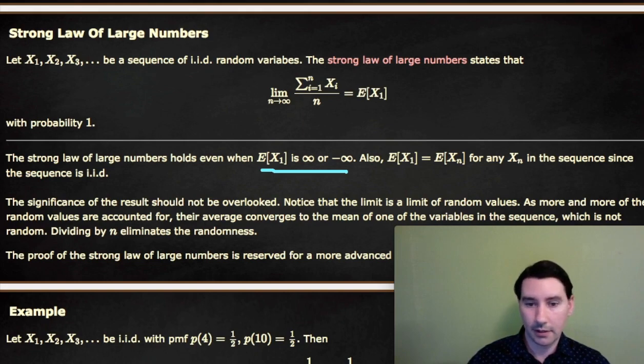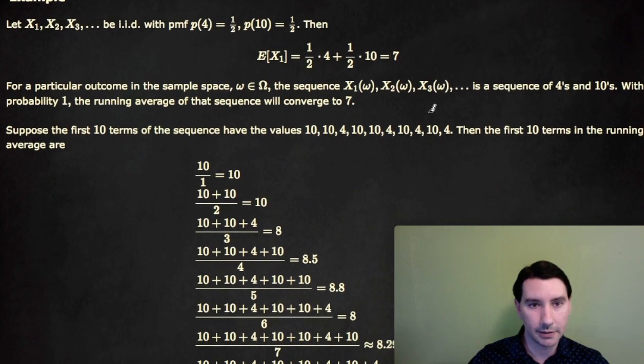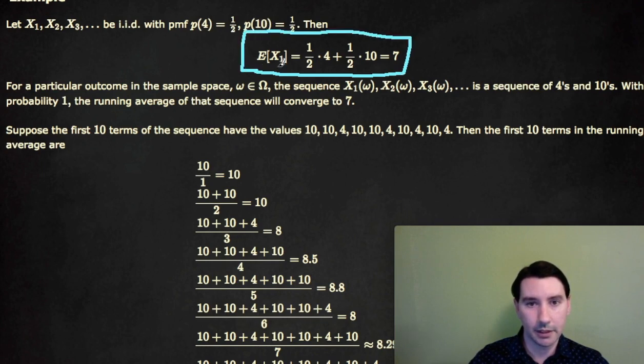So let's look at an example of computing some of these partial sums. We're going to let x1, x2, x3, and so on, be an IID sequence with PMF: the probability of 4 is a half, and the probability of 10 is a half. The expected value of x1, or any of the x's for that matter, is 1 half times 4 plus 1 half times 10, which equals 7.